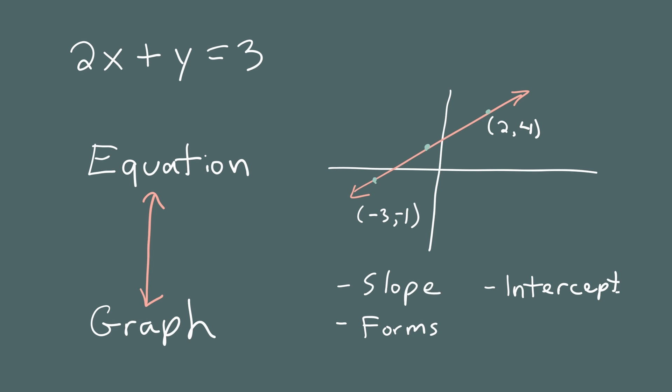So here's what I want you to take away from today's lesson: when you're given an equation, by making a list of its solutions you can draw its graph, and the graph is a picture of the solutions. Conversely, if I give you a graph and two points on it, you'll learn how to find its equation. Keep in mind that different equations have different shapes — circles, parabolas, wiggly curves, or straight lines. We're going to start with the simple graphs, and those are lines.